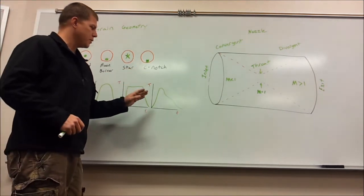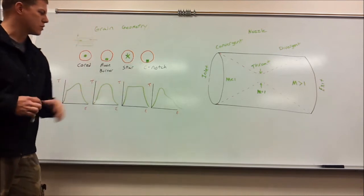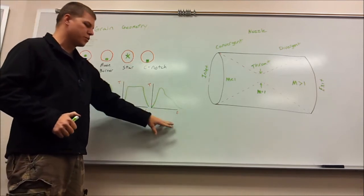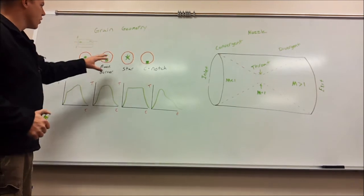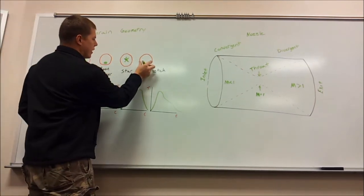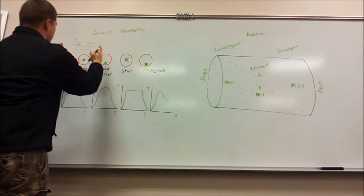With the C-notch, it kind of ramps up, peaks out, and then kind of burns out slowly over a period of time. It's a longer burn motor typically. It also burns from the inside here out, and then also from each grain in.